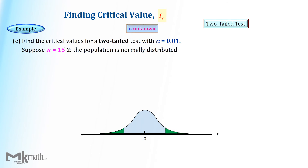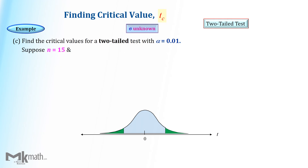For the last example, find the t-critical values for a two-tailed test with alpha equal to 0.01 and a sample size of 15. Assume that the population standard deviation sigma is unknown and the population is normally distributed.